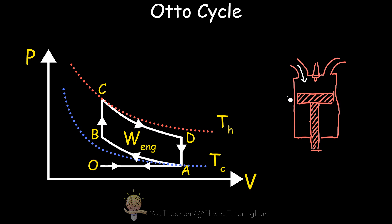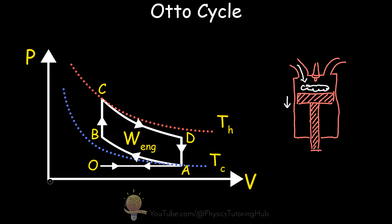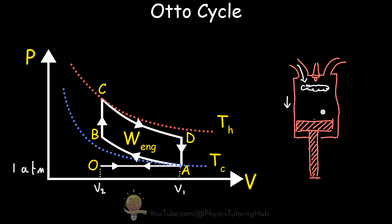We start at state O — the start of the intake stroke, where air and gasoline are drawn into the chamber. The piston moves down, drawing in a gaseous mixture of air and fuel. The volume in the chamber increases, moving to a higher volume, but the pressure stays at atmospheric pressure. The volume is increasing from V2 to V1, and when the piston has lowered to its furthest point, we're at state A, where the volume is at its highest value V1.